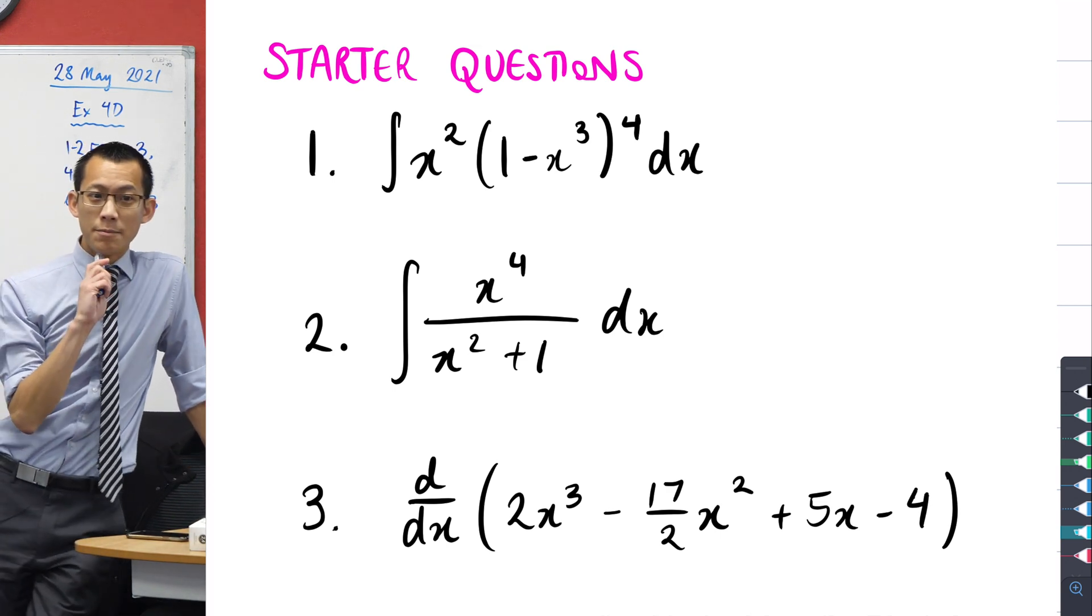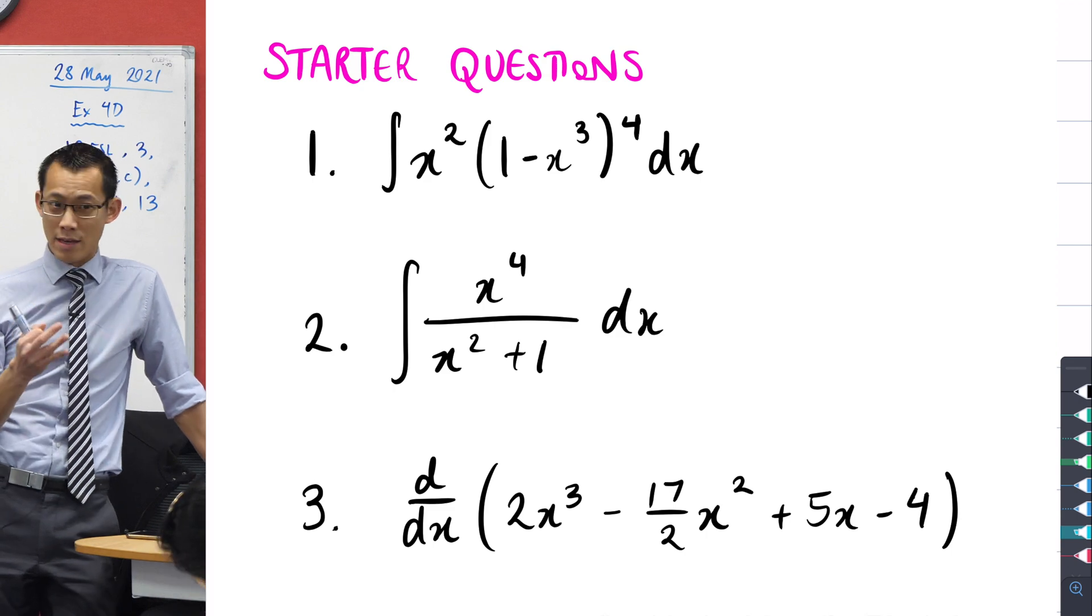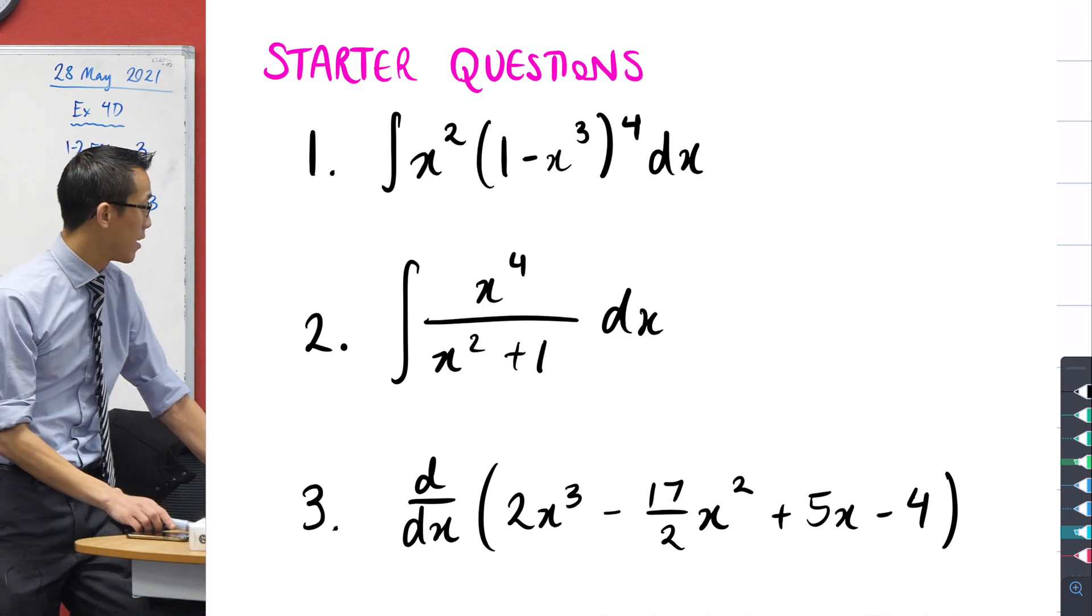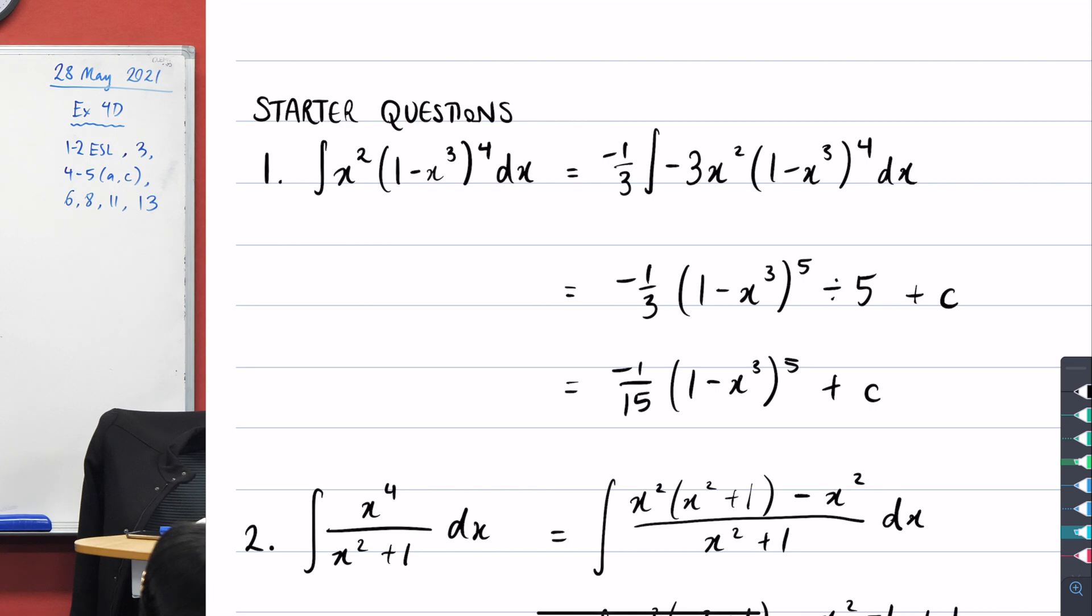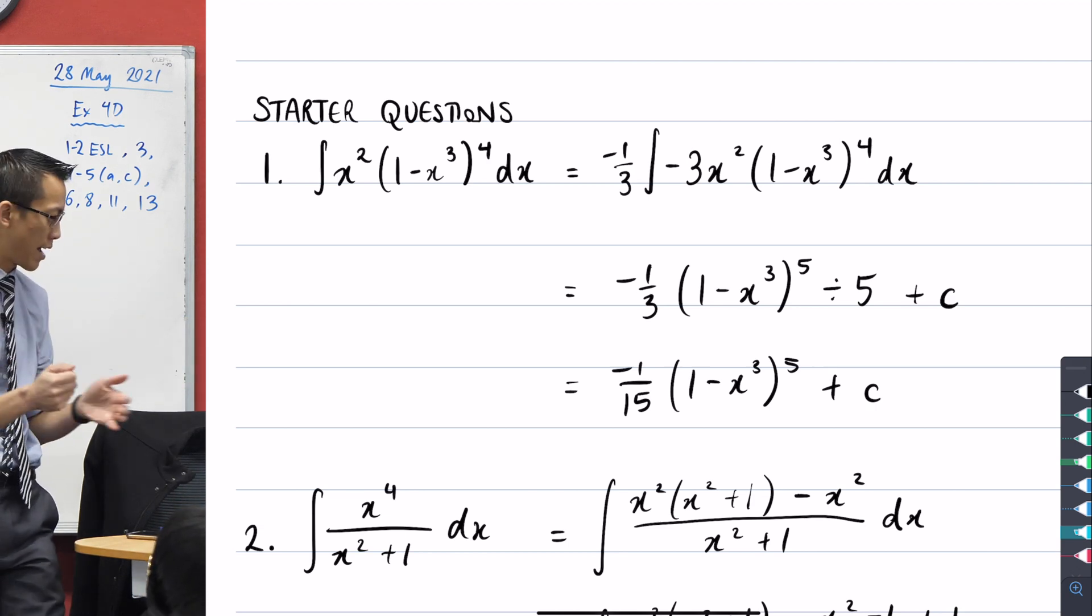So three questions here and I wonder if you connected the dots for why I gave you these three questions. We'll see how we go. In further integration we have seen questions like this actually back since extension one days, right? It's a fairly straightforward application of the reverse chain rule. Do you have any questions about it or is it reasonably uncontroversial? Question one? Question one's okay.